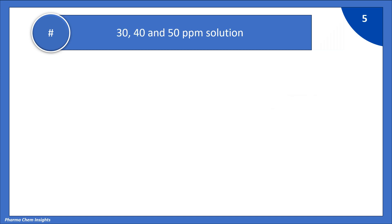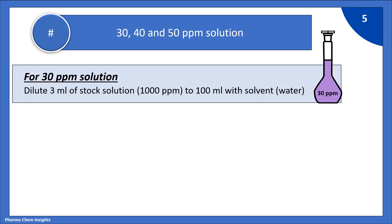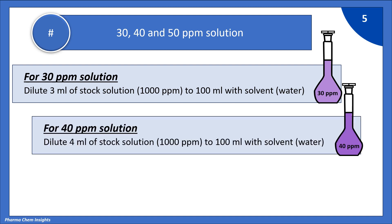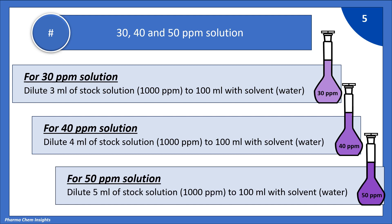Now let us see the preparation for 30, 40, and 50 ppm solutions. For 30 ppm, dilute 3 ml of 1000 ppm stock solution to 100 ml with water. For 40 ppm, dilute 4 ml of 1000 ppm stock solution and make up to volume with water. For 50 ppm, dilute 5 ml of 1000 ppm stock solution to 100 ml with water.